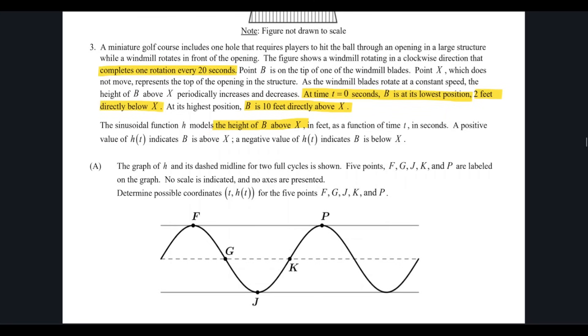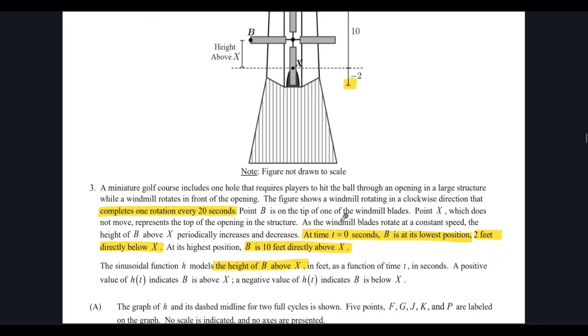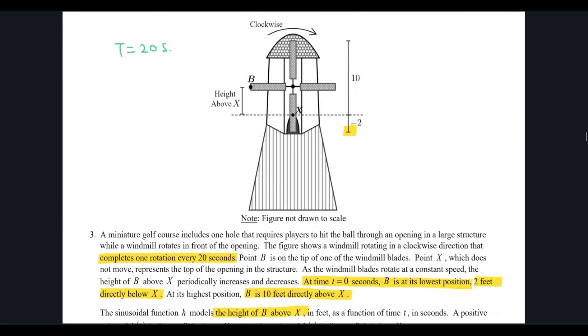Once again, I'm interested to know what my period is. I think we already concluded it is 20 seconds. Then what is the maximum height of the point B? It is already indicated very clearly, it is 10. Minimum is negative 2, and the midline is going to be 10 plus negative 2 divided by 2, which is 8 divided by 2 is 4. So that is the midline.